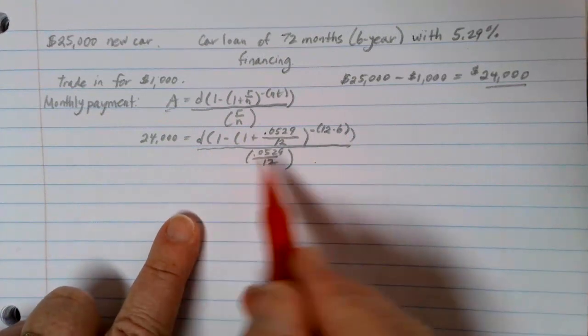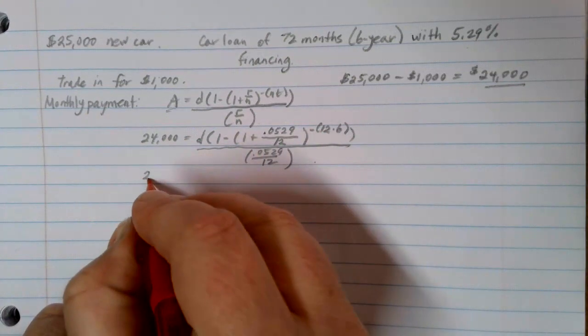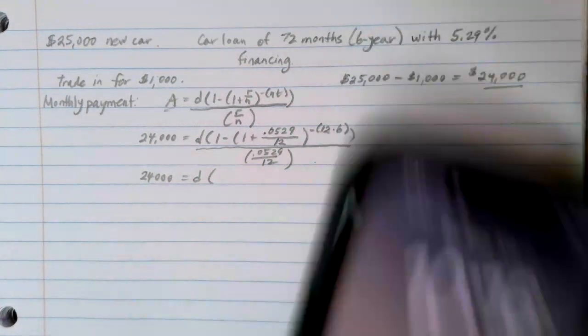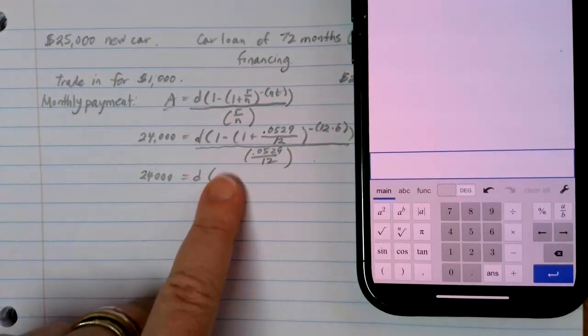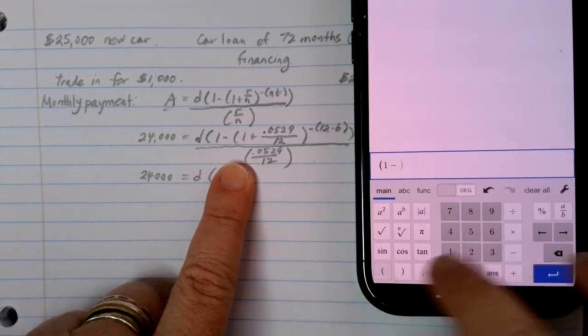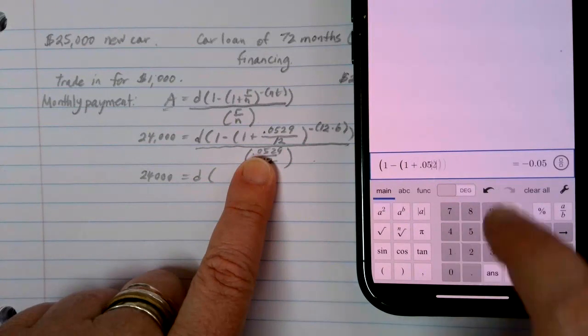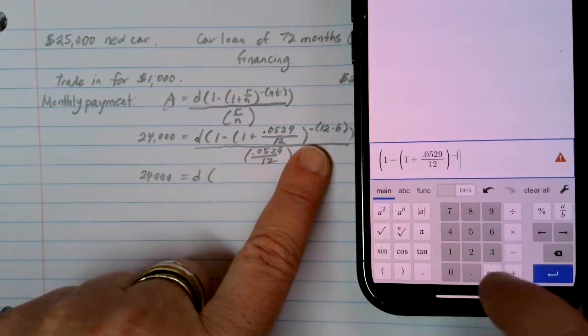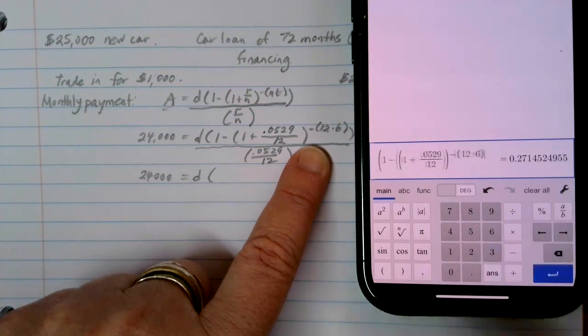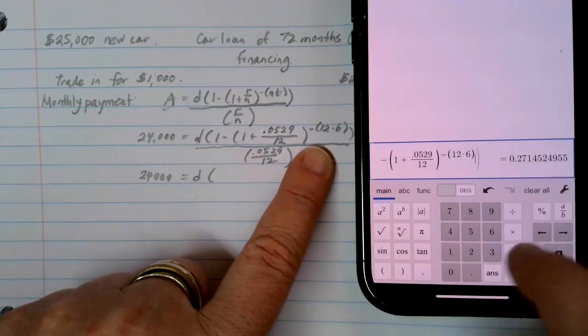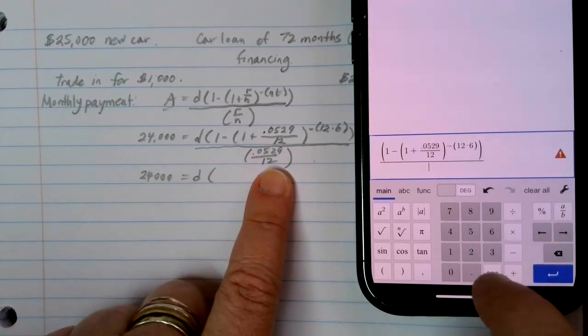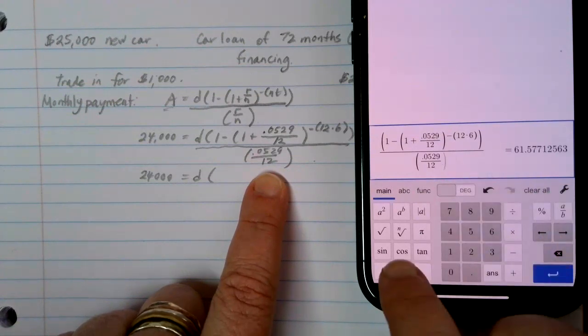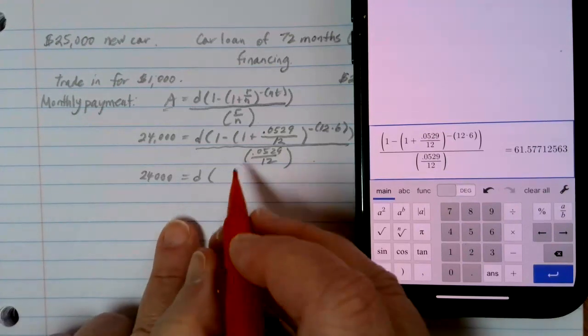I want to get the D by itself. So first I can simplify everything here on the right-hand side, and I'm going to end up with 24,000 equals D times this expression. So 1 minus 1 plus 0.0529 over 12 to the negative 12 times 6 power, and then divide the whole thing by 0.0529 over 12. That's going to get me 61.577.